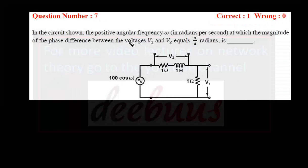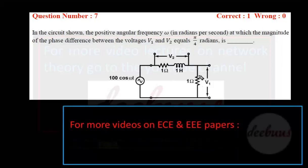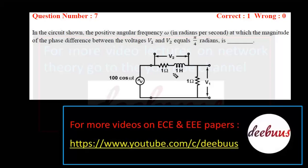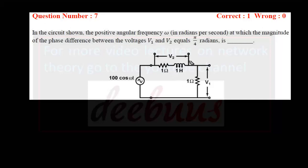Coming to the first question: in the circuit shown, the positive angular frequency omega in radians per second at which the magnitude of the phase difference between the voltages V1 and V2 equals π/4 radians. Checking the circuit, it is basically a series RL circuit. In a series RL circuit the same current must flow through all elements, so voltage is proportional to impedance. We have to calculate the phase offered by each arm.